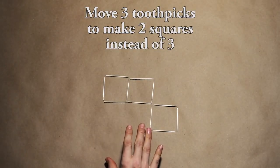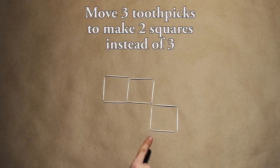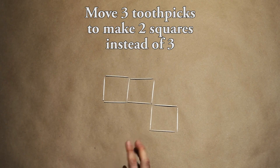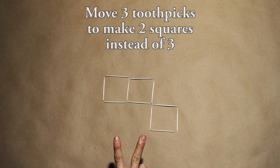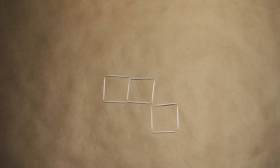Level two. We've got eleven toothpicks making three squares. Your job is to move three toothpicks to make two squares. Good luck. Pause the video and give it a shot. The solution once again will be at the end.